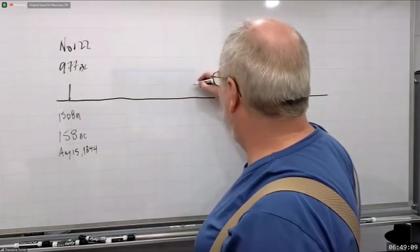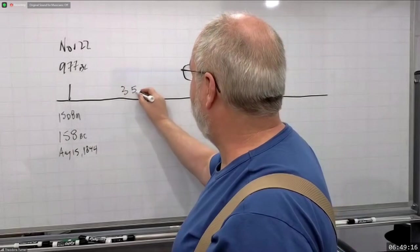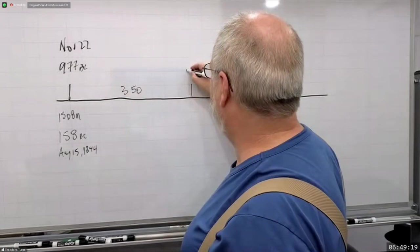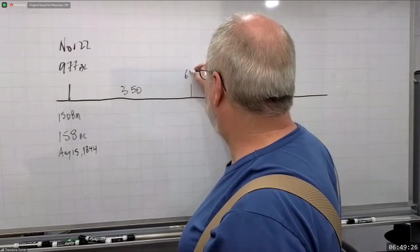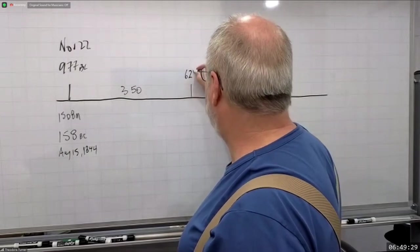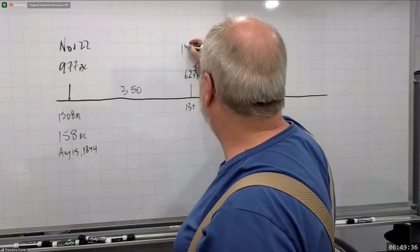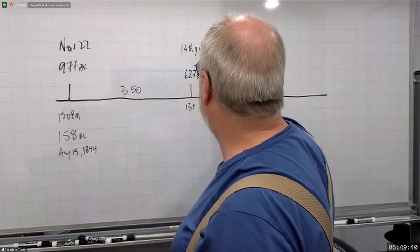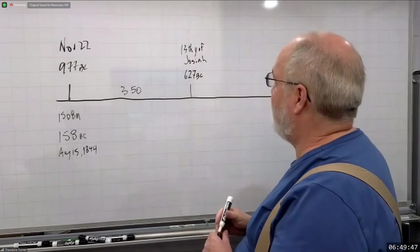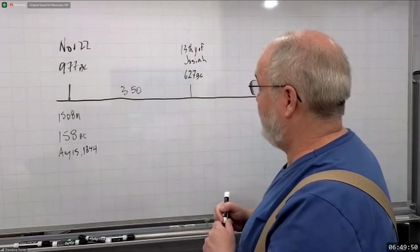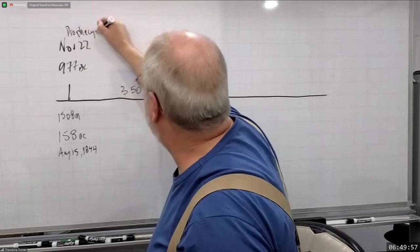And then we're going to have 350 years, and this is going to be in 627 BC. So this is the 13th year of Josiah. In his 13th year he's going to break down the altar of Bethel. So you have a prophecy here and a fulfillment. You have a prophecy with its fulfillment.